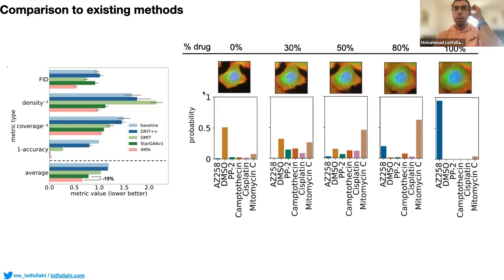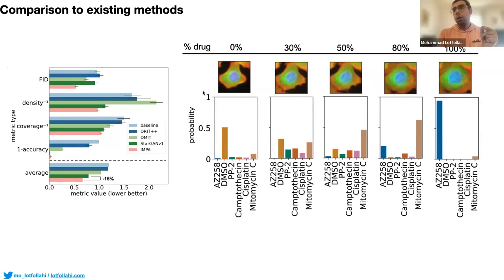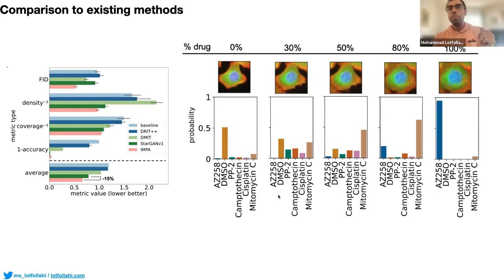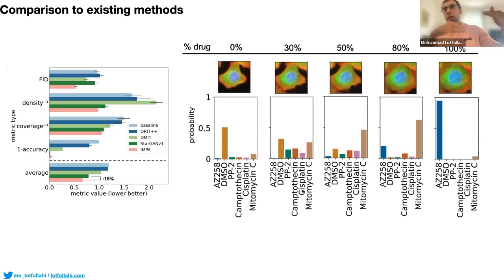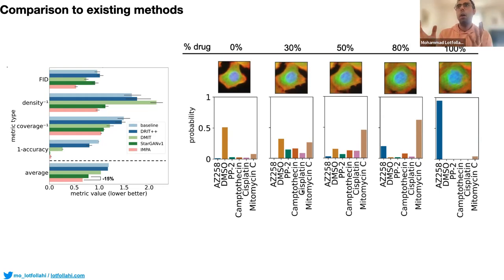For interpolation, we fed DMSO into the model and performed a linear interpolation going from DMSO to the AZ-258 drug. The generated images smoothly transition, and a drug classifier progressively shifts from DMSO to the target drug class — getting confused in the middle — and then recovers the target phenotype at the end, just by interpolating in drug space.